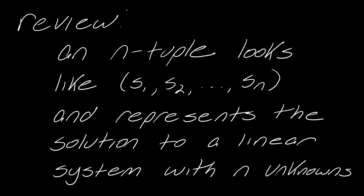And another term that I would just like to review here is the idea of an n-tuple. So this really represents the solution to a linear system with n unknowns. So I have S1, S2, all the way up to Sn. So these are all the different parts of the solution with n unknowns. So when you have a system with two equations, you just have like an ordered pair. But if you have more, then we just call it an n-tuple.